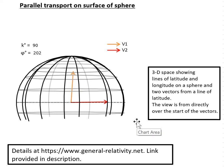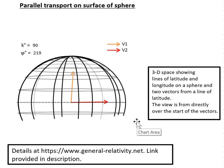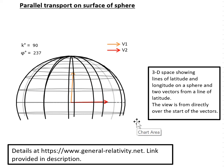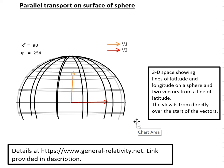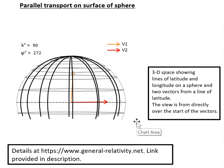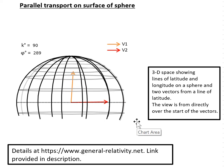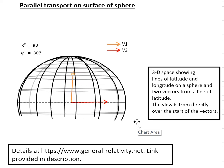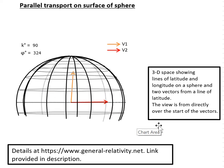So not only is the angle between the vectors constant and the length of the vectors constant, but the vectors are staying at the same angle to the line, which is a geodesic.